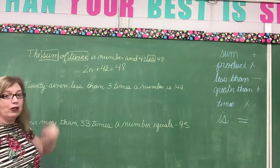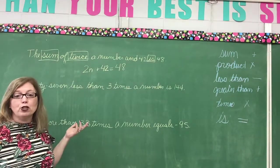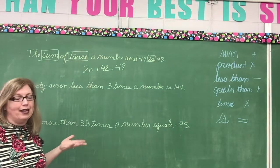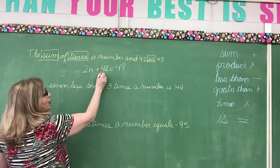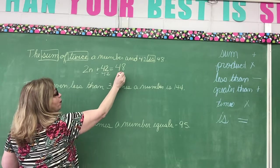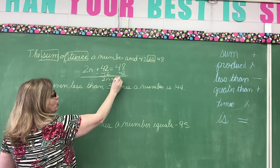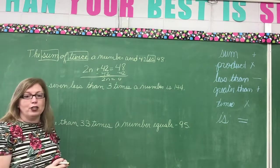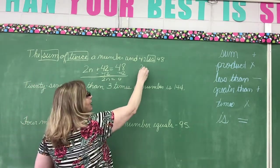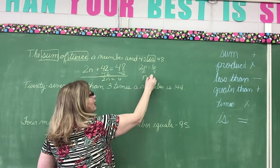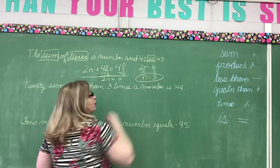Now don't leave it like this. Your book is going to ask you to tell them what's the number. What is n? Okay well we know that we have to subtract 42 from each side. So we're going to get 2n equals 6. Now what do I do? I can't leave it as 2n equals 6. I need to divide by 2 on both sides. So n equals 3.